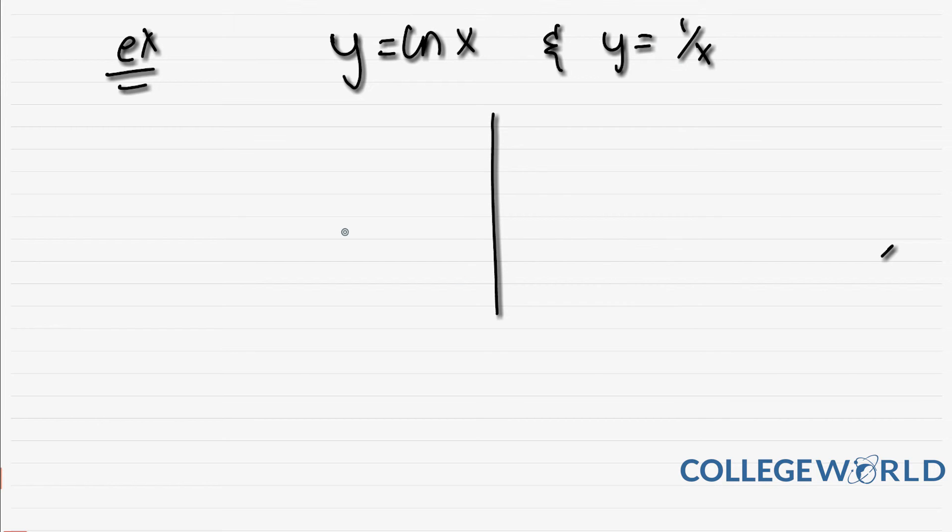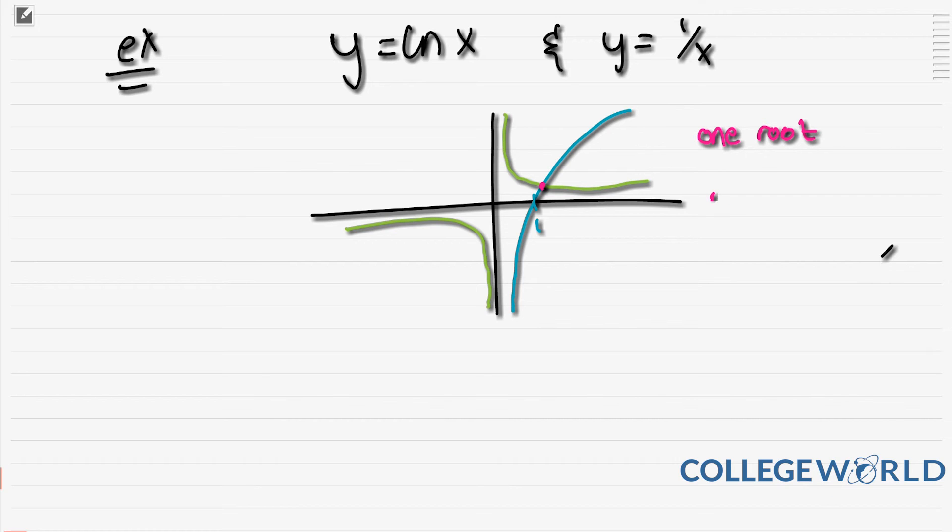Now things can get a bit more complex. They can ask you to solve an example like this: show that if you have y = ln x and y = 1/x, first graph them. The graph of ln x crosses at 1, and 1/x has the y and x as asymptotes. Here you see there is one meeting point, so there is one root when you're equating the two.